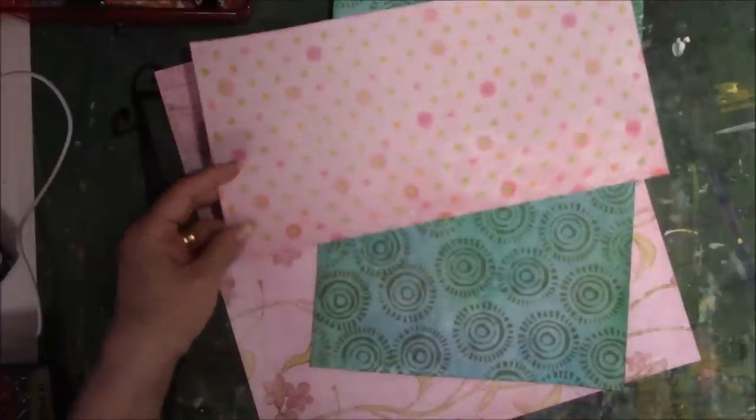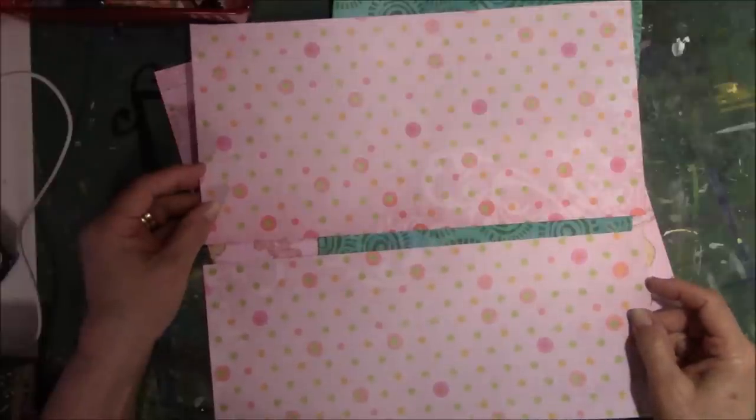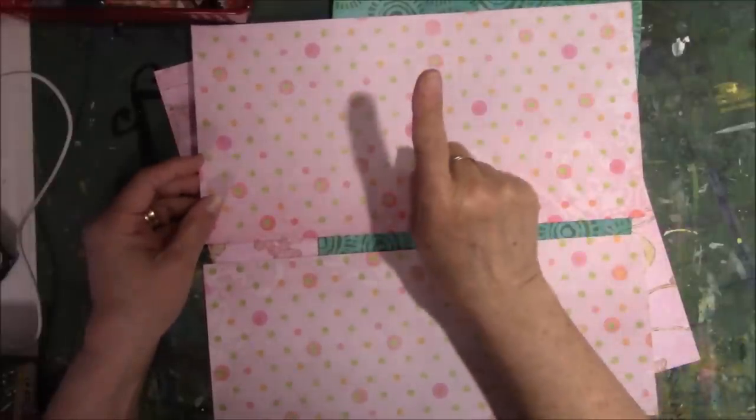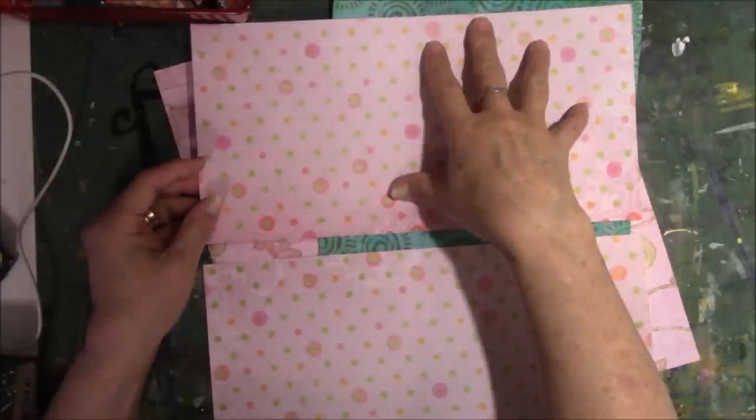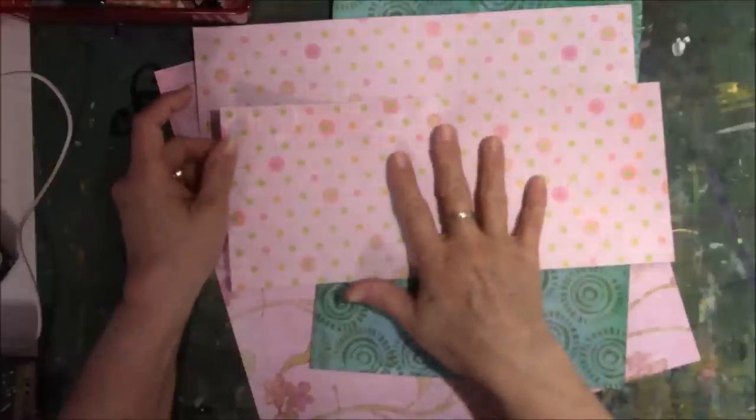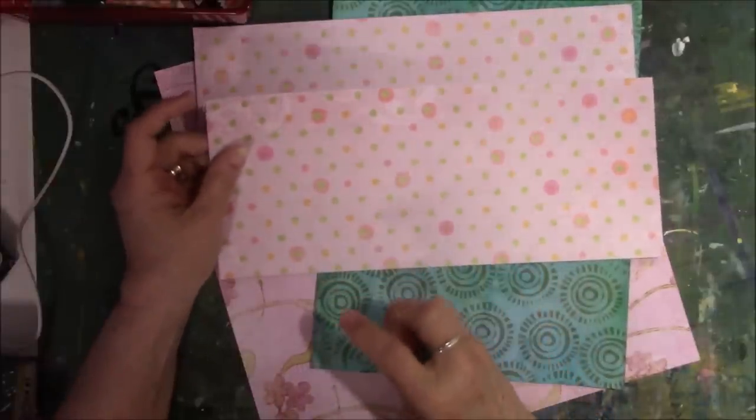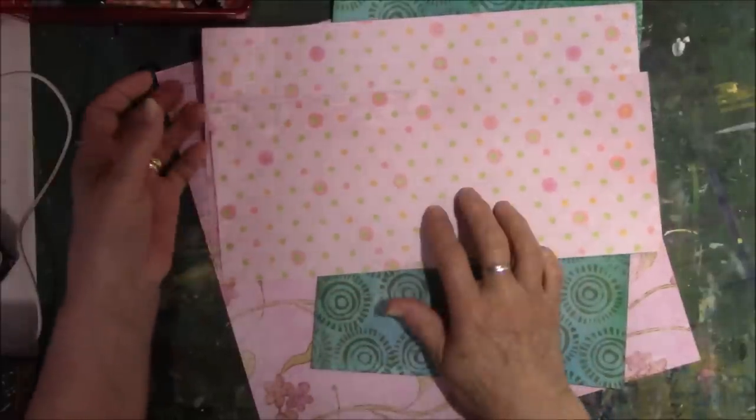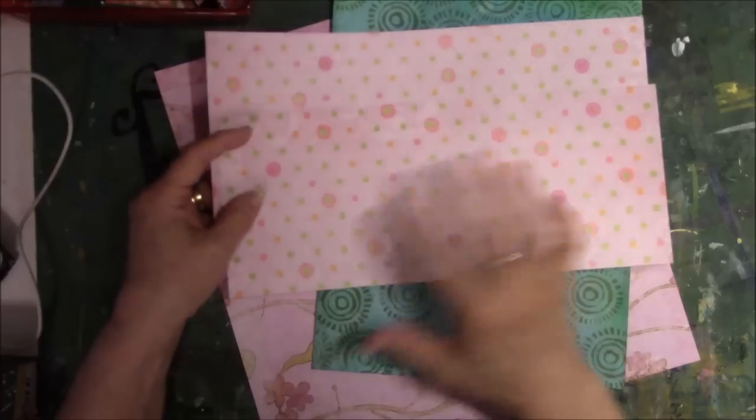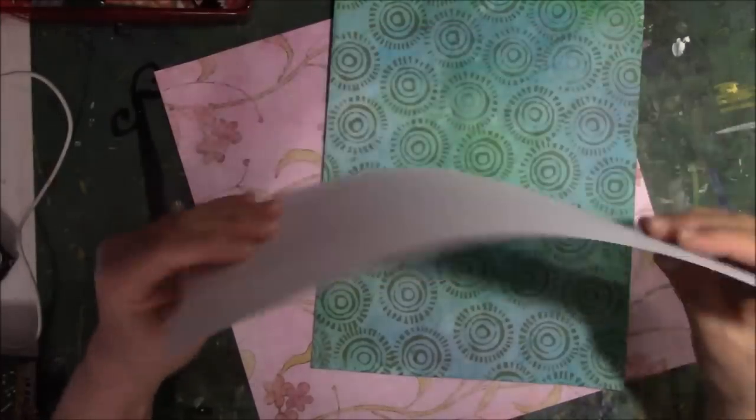That made these pockets - an 8.5x11 sheet of paper, which is just your basic copy paper that I colored, painted, jelly printed, whatever on it. That's that size book. Then this one is made by a 6x12 piece of paper, which is this one right here.